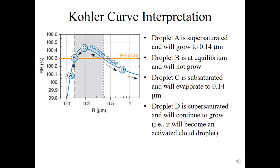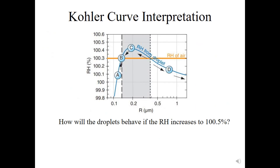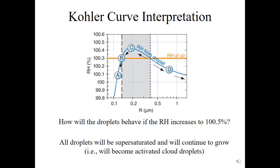Now, how will the droplets behave if the relative humidity increases to 100.5%? If the environmental relative humidity is 100.5%, it doesn't matter which droplet — A, B, C, or D — they all require less relative humidity to be at equilibrium than the environment actually provides. So every one of those droplets will be supersaturated, continue to grow, and all become activated cloud droplets.